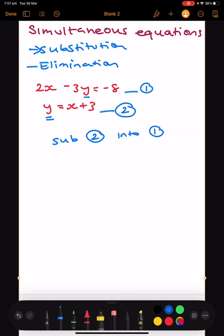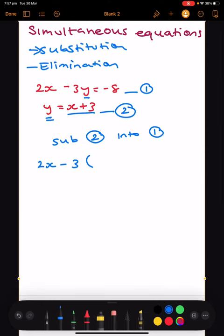If we do that, we end up with 2x - 3(x + 3) = -8. I write x + 3 in the brackets because that's what y is. Then I'm going to expand and use algebra to solve the rest.